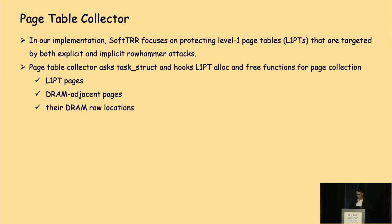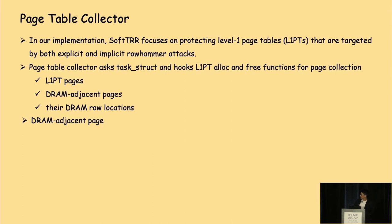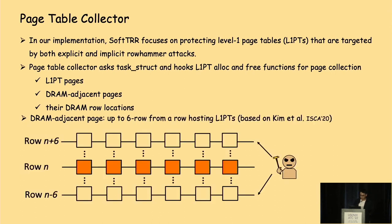For L1 PT pages dynamically allocated or freed after enumeration, the collector hooks L1 PT alloc and free functions in the kernel. A DRAM adjacent page refers to a page that resides in a row adjacent to a row hosting L1 PT pages. Based on Kim's paper from ISCA 2020, the largest row distance between a victim row and the hammer row is up to six rows. So in our implementation, a DRAM adjacent page row can be up to six rows away from an L1 PT page row.